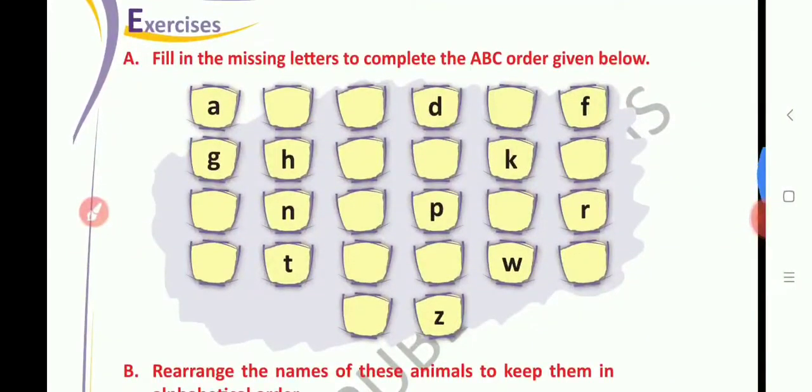Exercise Part A: Fill in the missing letters to complete the ABC order given below. Children, here we have to fill missing letters. This format is small letters format and we have to write down in small letters only.